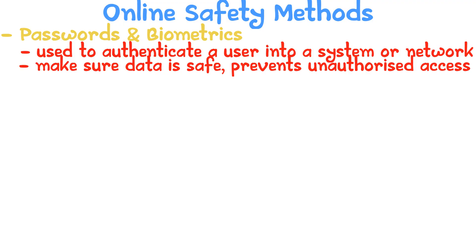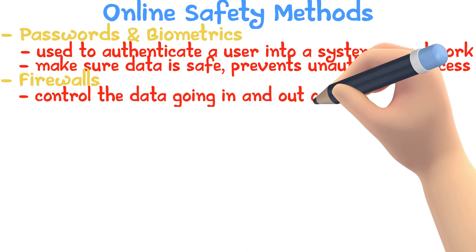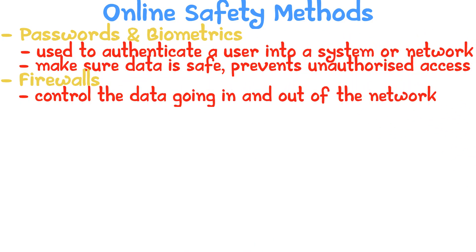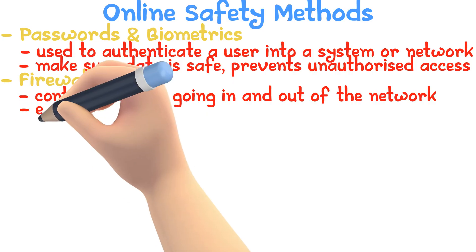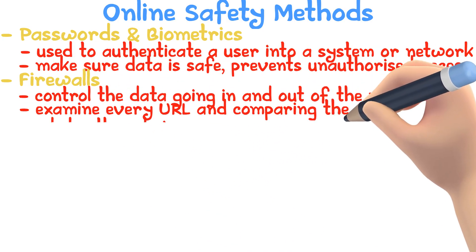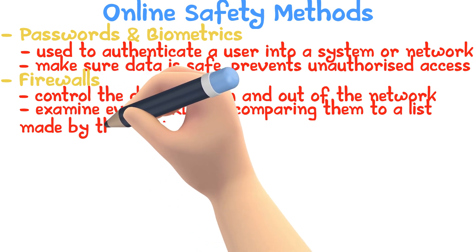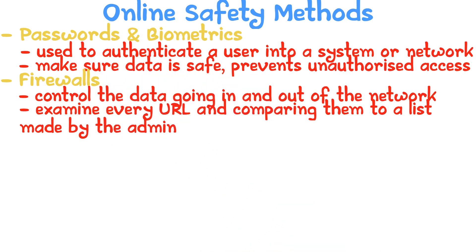A good password should not be common and should be changed frequently. Firewalls control the data going in and out of the network. They work by examining the address of everything entering and comparing it to a list set by the admin. The list states which addresses should be allowed and which should not.